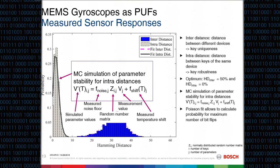We made a Monte Carlo simulation for the intra-distances to get better statistics and simulate the worst case. We describe the parameter variation on one sensor by an equation incorporating the noise floor (normally distributed, determined by repeated measurements), a normally distributed random number, the actual measurement value, and the temperature shift factor determined at 85°C. We ran 10,000 iterations to obtain sufficient statistics for a Poisson fit, allowing calculation of the probability for a particular maximum number of bit flips — important information for a later calculation.